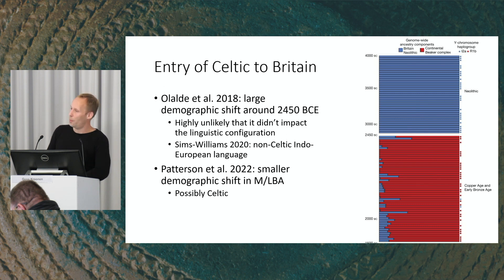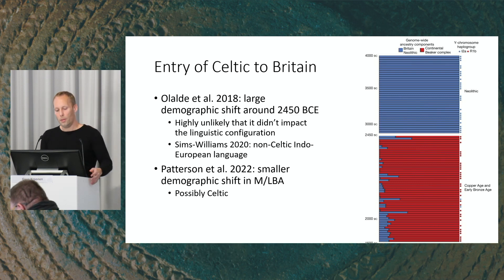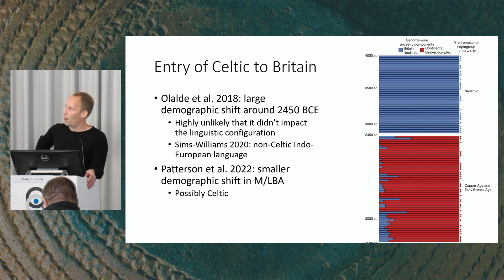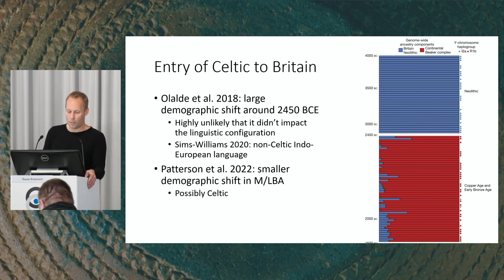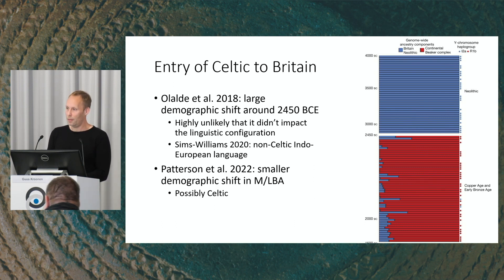The debate has focused mainly on the entry of Celtic to Britain. Britain is peripheral to the original Celtic homeland, but it's the only place where Celtic languages still persist today. We now know genetically there was a big Bell Beaker demographic impact, and it seems highly unlikely that it didn't affect the linguistic configuration of Britain. However, Sims-Williams notes it could have been another Indo-European language superseded by Celtic later, since Patterson et al. showed a later population movement from France that might be the vector that brought Celtic to Britain.